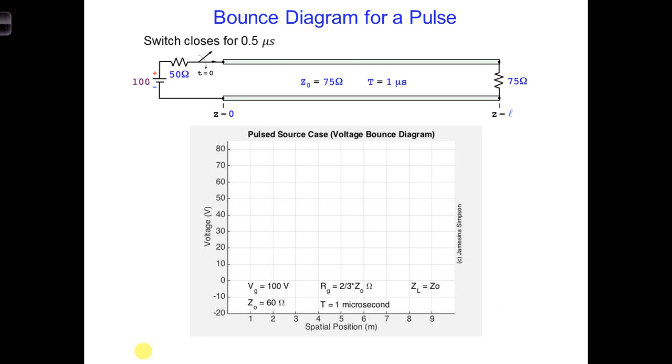We can even use a bounce diagram with pulses. A solid line is generally used to represent the leading edge of the pulse, and a dotted line is generally used to represent the trailing edge of the pulse. You'll see a better example of that soon.